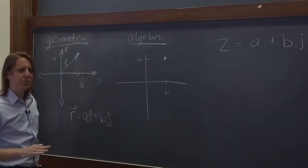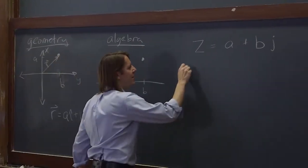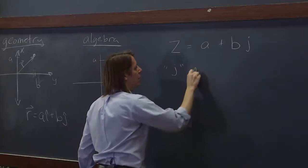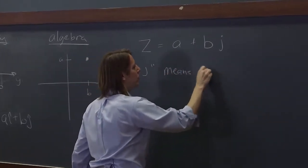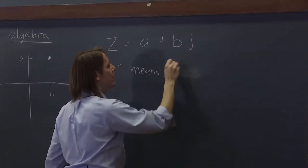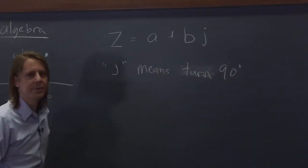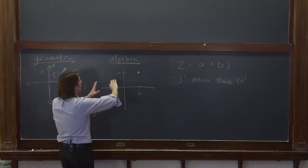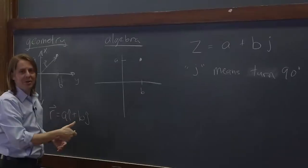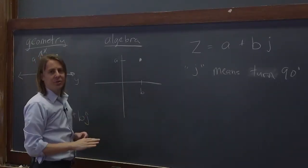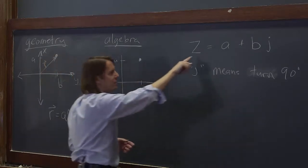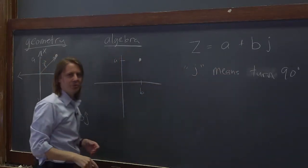z equals a plus b times j. And what we're going to do is we're going to make up a rule. So j means rotate or now turn 90 degrees. So a doesn't necessarily mean a specific direction. Let's say you always start going up. And then you can turn. You can do whatever you want. But as you go through this algebraic expression, you have to follow these rules.